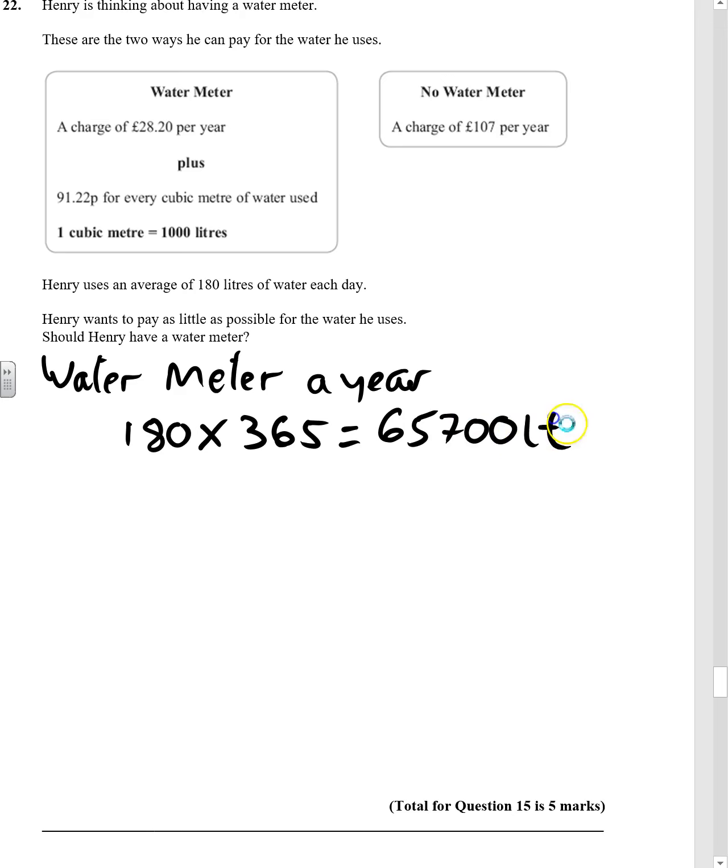Now, obviously you can do that on your calculator. In one cubic meter, there's a thousand liters. So we need to do 65,700, that's the number of liters, divided by a thousand gives us 65.73 meters cubed.